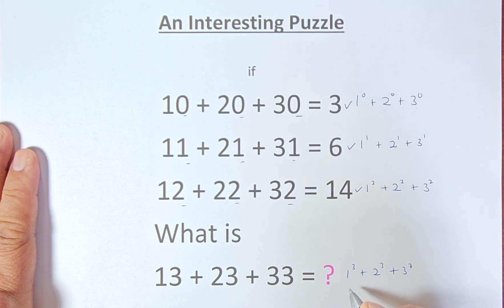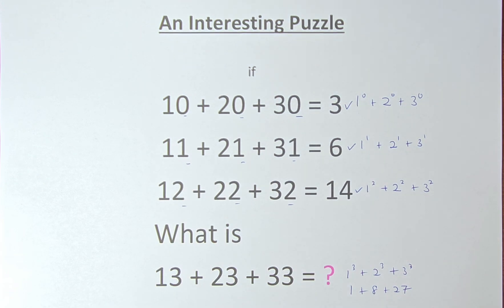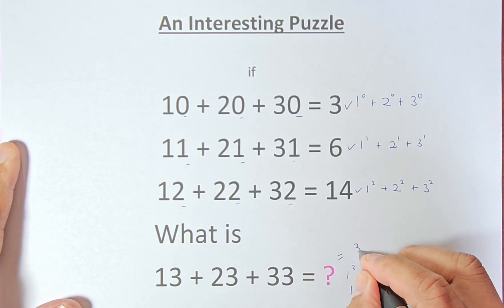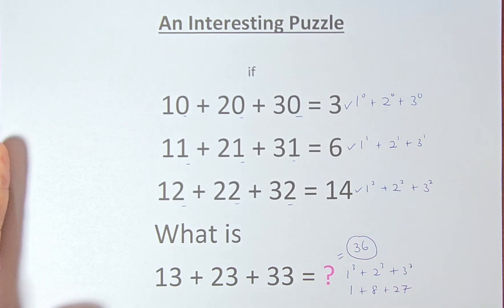Last but not least, it's going to be 1 cubed plus 2 cubed plus 3 cubed. So we're going to do slowly. So 1 cubed is 1, 2 cubed is 8, 3 cubed is 27. So 1 plus 8 is 9, 9 plus 27.